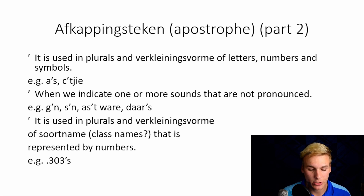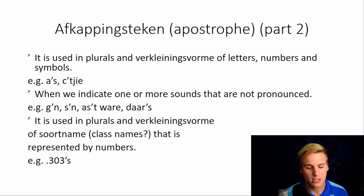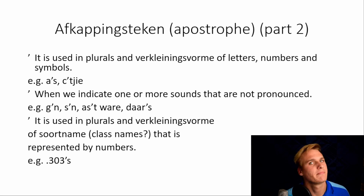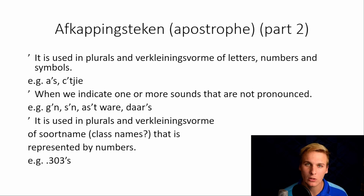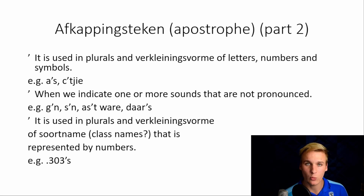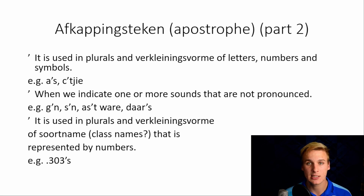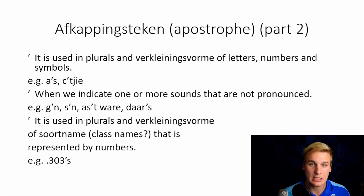The afkappingsteken, Part 2. It is used in plurals and diminutives of letters, numbers, and symbols — the entire alphabet, all the numbers, all symbols. For example: a's and sietjie. Multiple a's and a little c. When we indicate one or more sounds that are not pronounced, for example: geen turns into g'n — 'Daar is g'n bal nie' — there is no ball. You can see how we omit the double e and replace it with an apostrophe. S'n is used to show possession — 'Die bal is die seun s'n' — it can also be used in its active form: 'Dit is Bit se bal.'